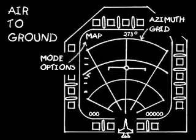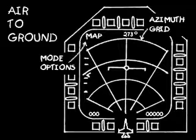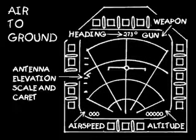In the air-to-ground modes, the range and azimuth grid fans out from your aircraft's position at the bottom of the display. Your current mode is displayed in the upper left corner. Bearing is in the top middle, and weapon selection is to the top right. Your barometric altitude is in the right corner, and your true airspeed is in the lower left. The unsteadied elevation carrot is on the left side of the display.